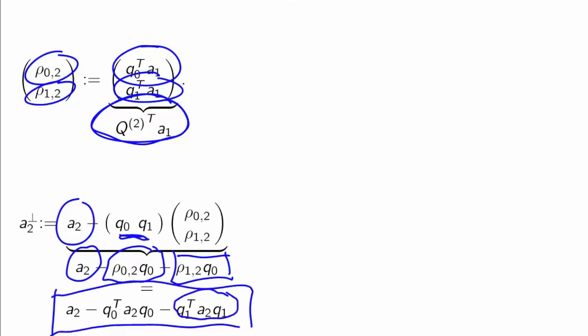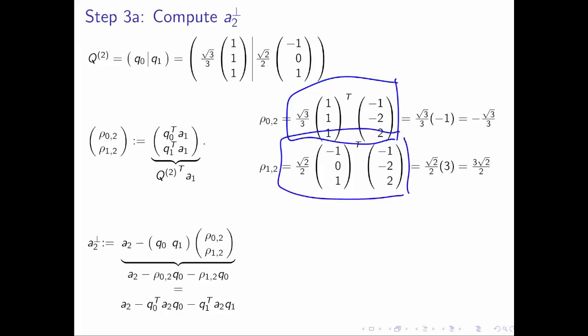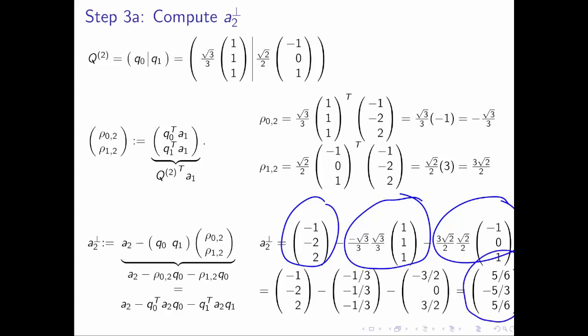This was the formula for the component of a2 in the direction of vector q1. So you can either think of this as computing the component of a2 perpendicular to the column space of q^2, or you can think of it as taking vector a2, subtracting out the component in the direction of q0, and then subtracting out the component in the direction of q1. That leaves you with the component of a2 that's orthogonal to both q0 and q1. If we do this for our concrete example, we take the inner products of q0 with a2 and q1 with a2, giving us these scalars, and the result is the component of a2 orthogonal to both q0 and q1.